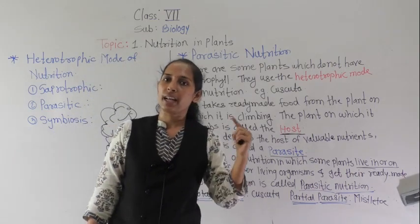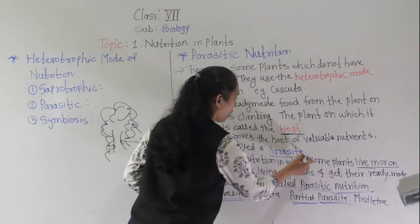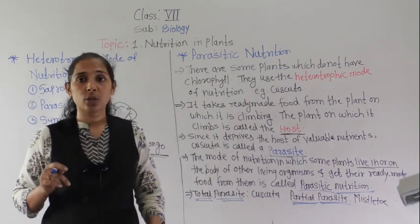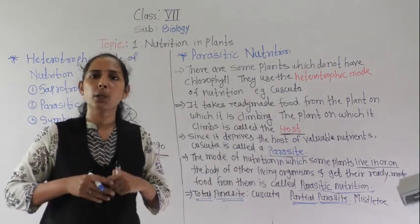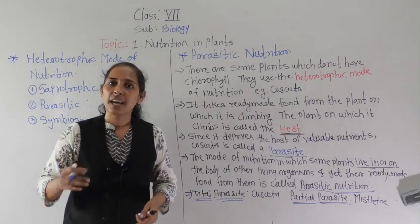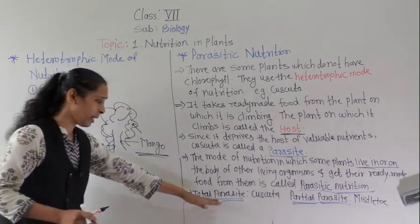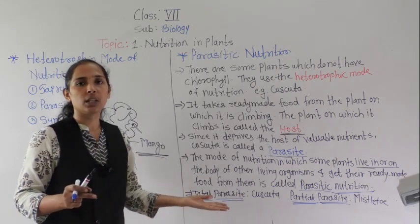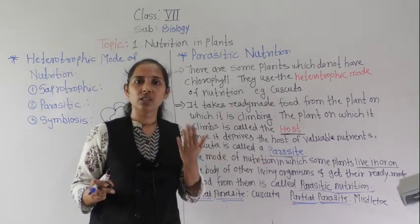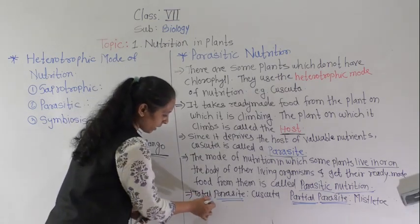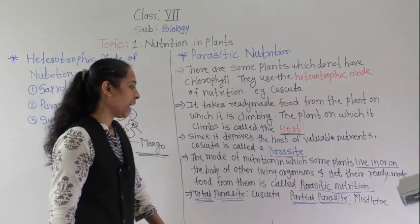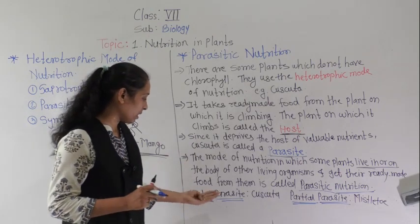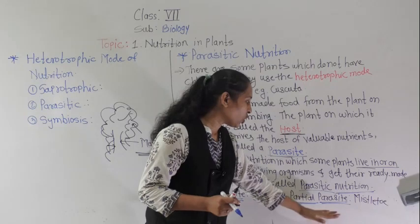The organisms following the parasitic mode of nutrition are called parasites. In the parasitic mode of nutrition, there are two types of parasites — some are total parasites and some are partial parasites. A total parasite totally depends on the host plant for food, just sucking the nutrients from the host plant, doing nothing else. The example is cascuta.